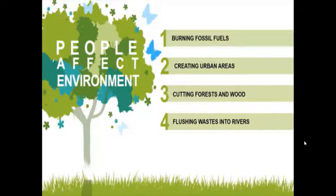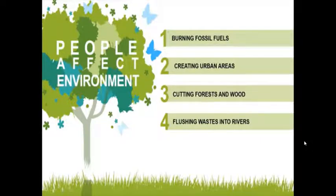We use wood and cut forests. For today's use, we use paper — we need paper, and to make paper, we cut trees. Flushing waste into rivers — we dump and flush waste, including sewage water and factory water, into rivers. This causes significant changes and affects our water resources.